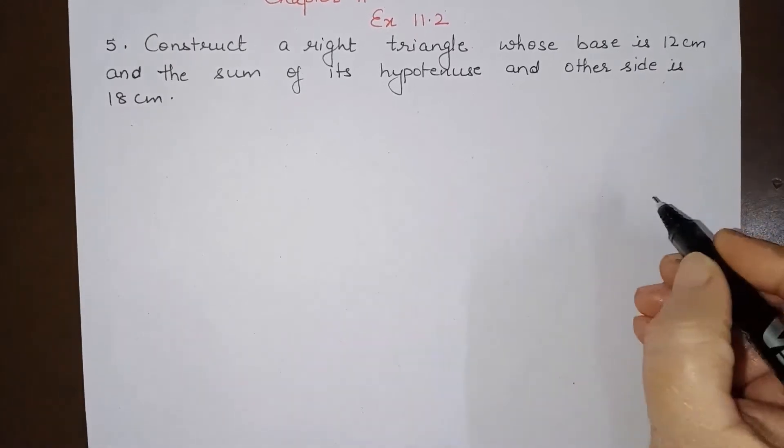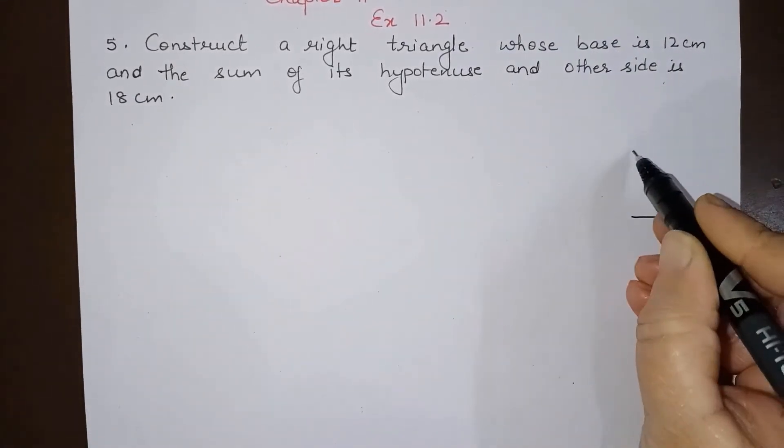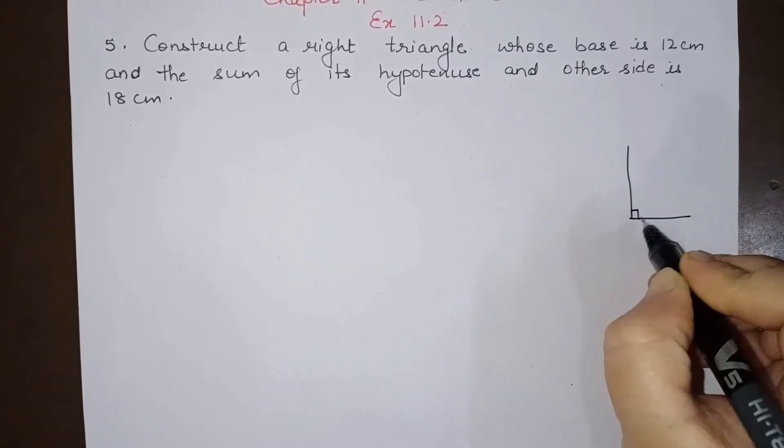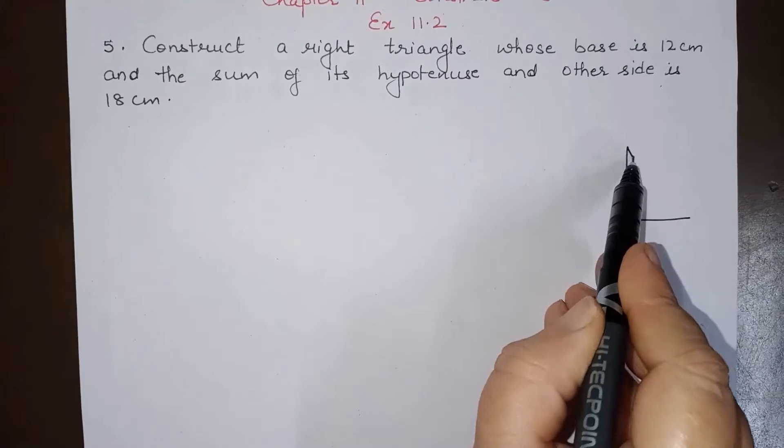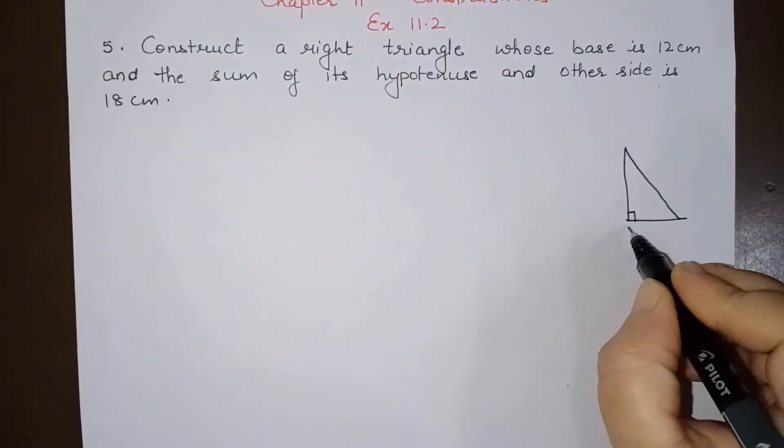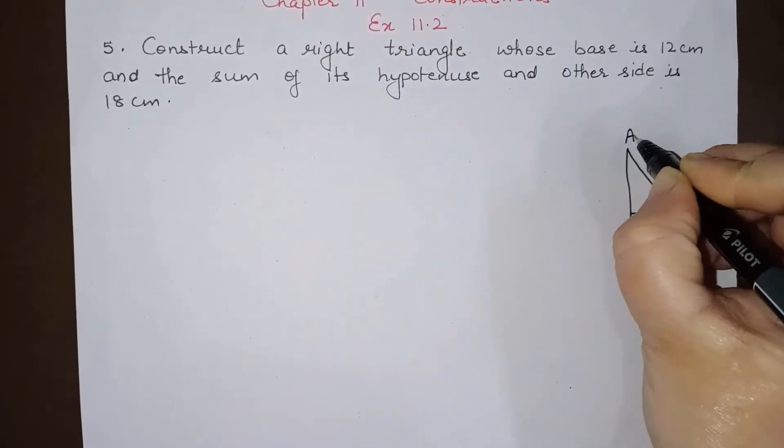Let us first draw the rough sketch for this question. We have to construct a right triangle. This is a right angle and this is a right triangle. We can construct it like this, and this can be taken as BC and this can be taken as A.